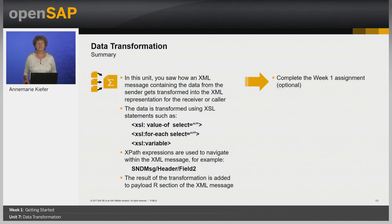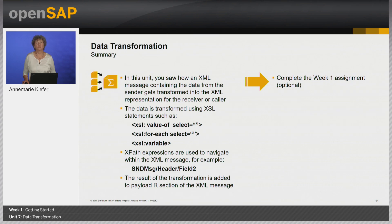Here is a summary of this unit. The data in the XML message is transformed using XSL statements such as xsl:value-of select for extracting a value from an element, xsl:for-each select for navigating nodes in the XML message, and xsl:variable for defining a variable. XPath expressions are used to navigate through sections and nodes in the XML message. At runtime, a new section R is created in the XML message with the transformed data. This is the final unit for Week 1. Thank you for attending this week — we hope you enjoyed it and we wish you all the best for the weekly assignment. Next week, we will show you how to build an integration scenario.